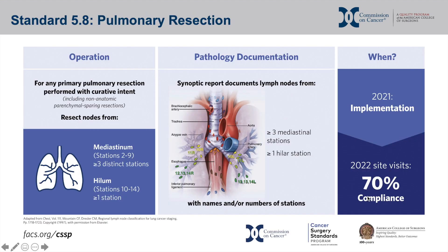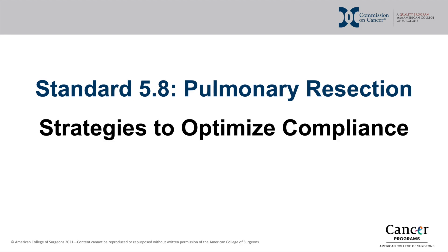To summarize Standard 5.8: for any curative intent pulmonary resection for a primary pulmonary malignancy, resection must include lymph nodes from at least three mediastinal lymph node stations and at least one hilar lymph node station. Documentation must specify the names and/or numbers of the stations examined and must be included in the CAP synoptic report. Implementation should start in 2021, with a requirement for 70% compliance when the 2021 pathology reports are reviewed at the 2022 site visit.